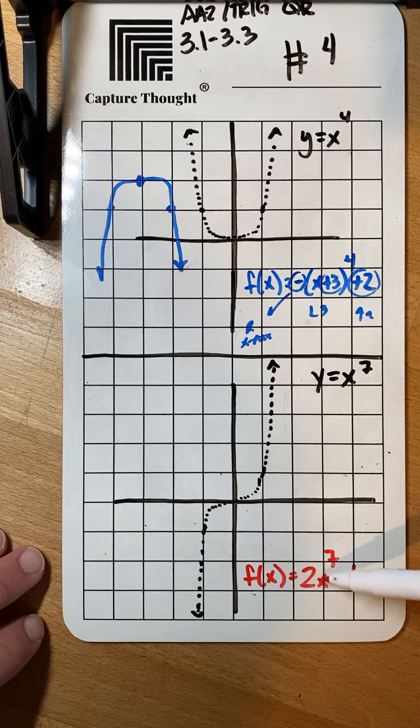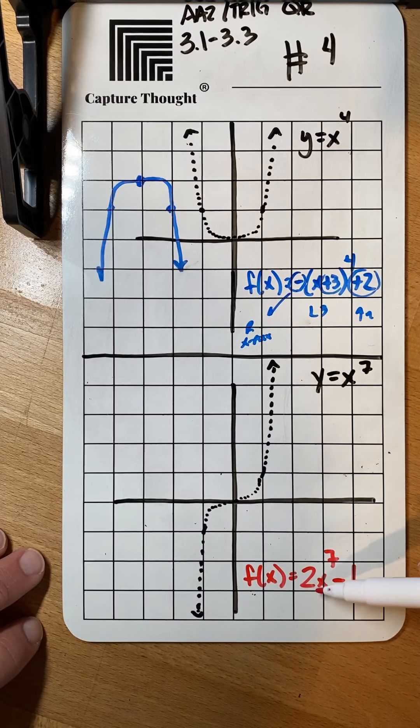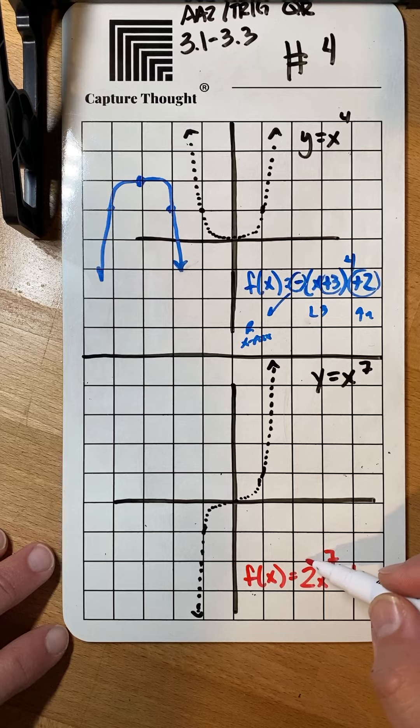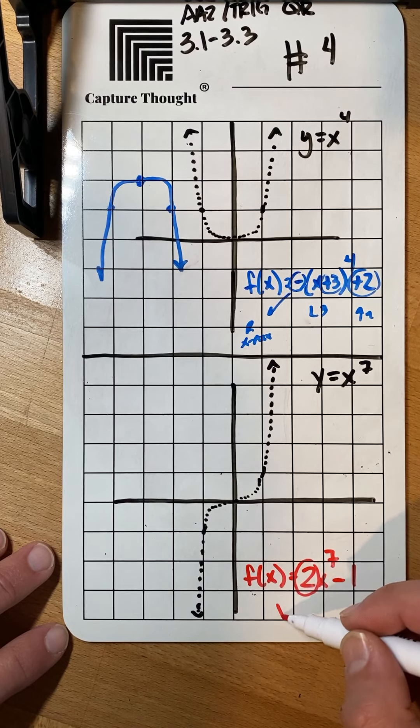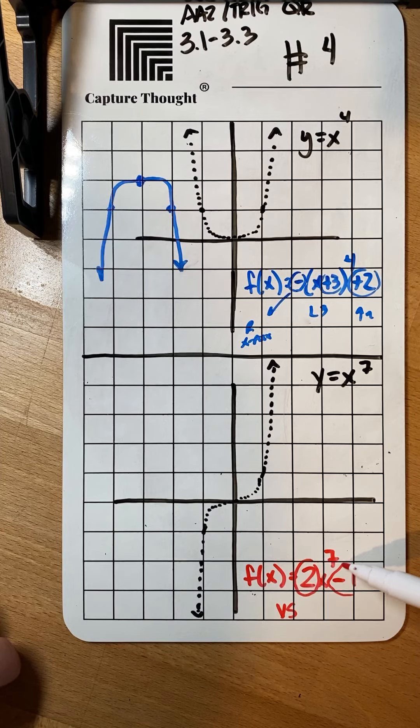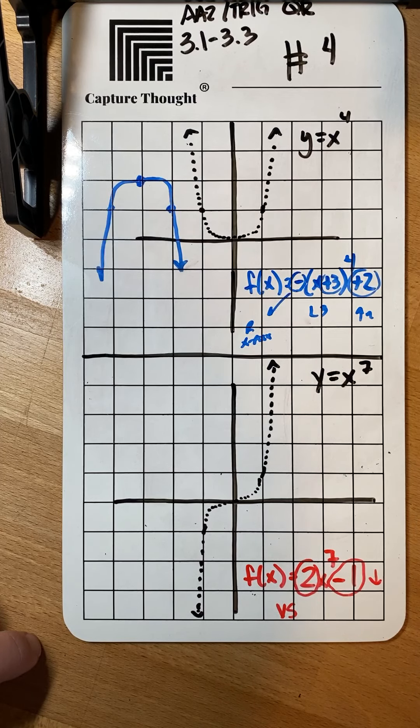Down here you have to know that x to the seventh is being transformed to two times x to the seventh minus one. You got to know that that two is going to be a vertical stretch by a factor of two and that minus one is going to move your graph down one unit.